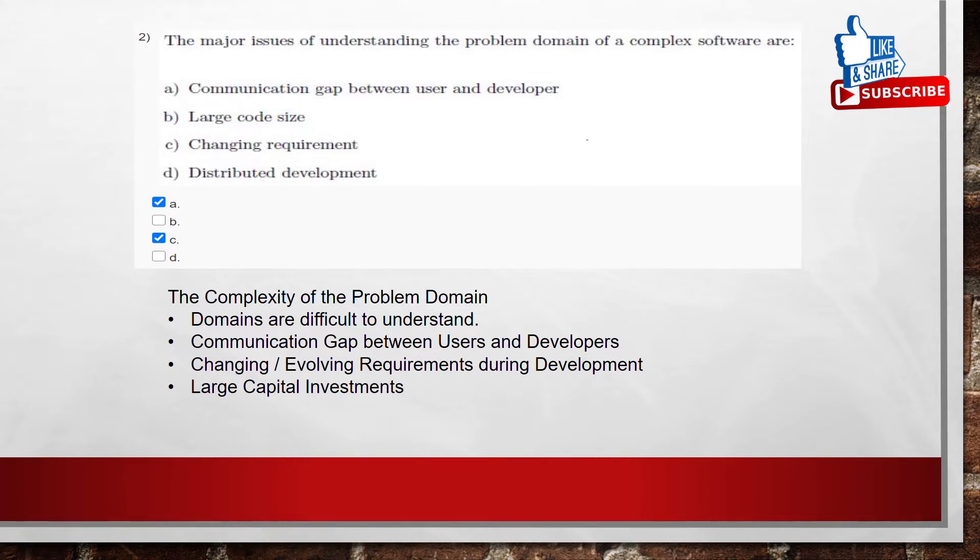As we know that the complexity of the problem domain mainly depends on domains are difficult to understand, Communication gap between users and developers, Changing or evolving requirements during development, Large capital investments. Coming to the correct options, A and C.